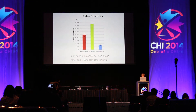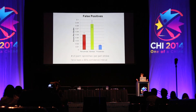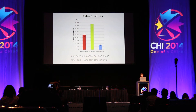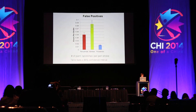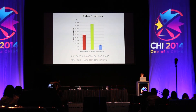The false positive rate, normalized by the total number of strokes the user draws — essentially errors per stroke — shows that our approach, again on the right, offers a dramatically lower false positive rate than the other applications. In summary, we have a much lower false positive rate and a fairly high true positive rate compared to these other applications.